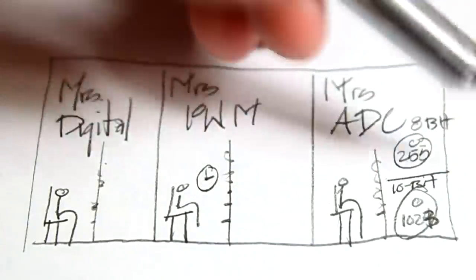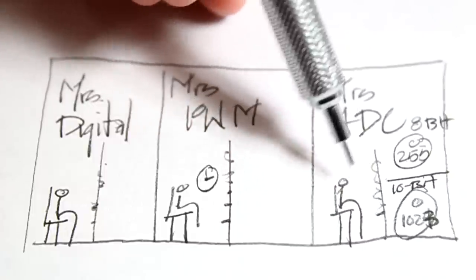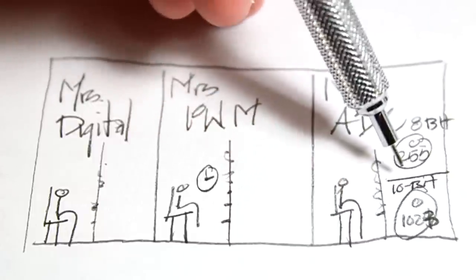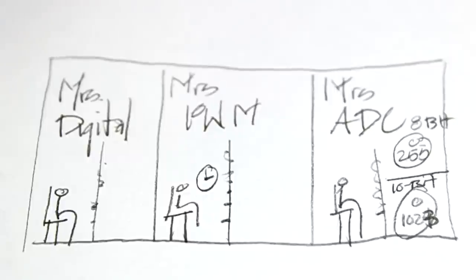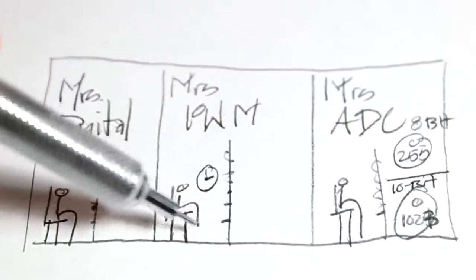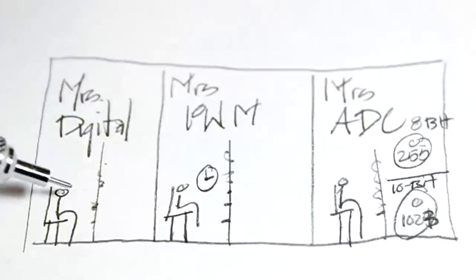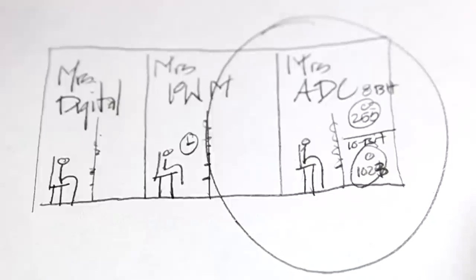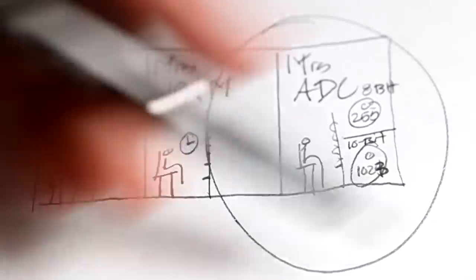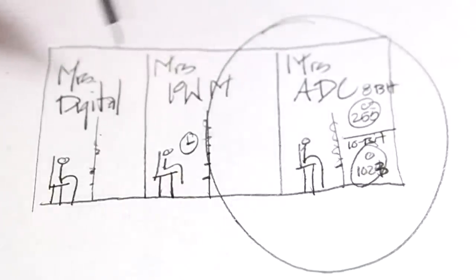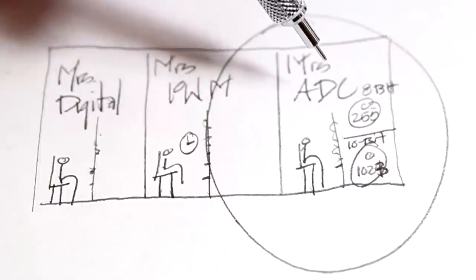And what she listens for is a voltage between 0 and some voltage reference that you give her. Mrs. PWM can only understand zeros and ones, but she knows how to time between the zero and ones. And Mrs. Digital, she can only understand 0 and 1, which is 0 volts and 5 volts. Today, we're going to be talking about Mrs. ADC, but these are the three main ways you can give information to a microcontroller.